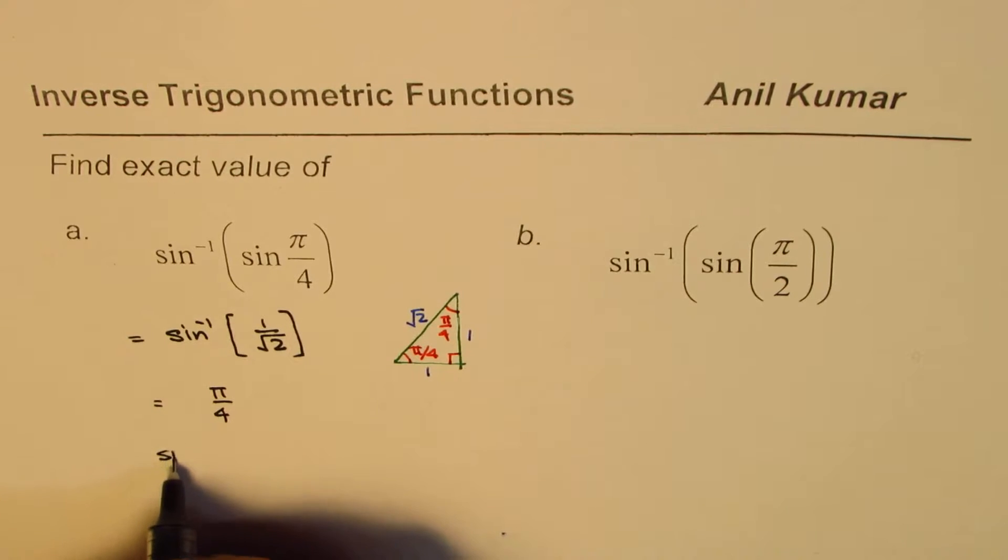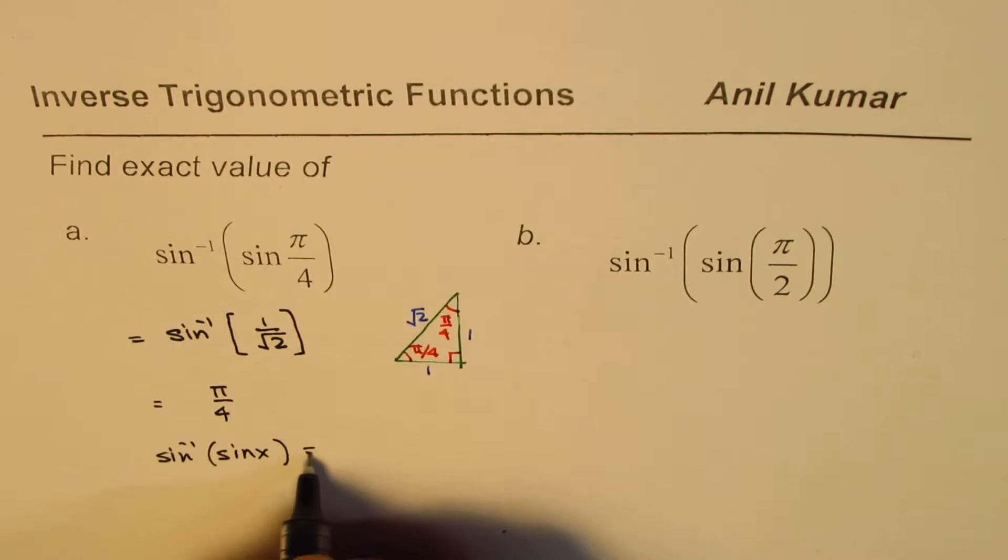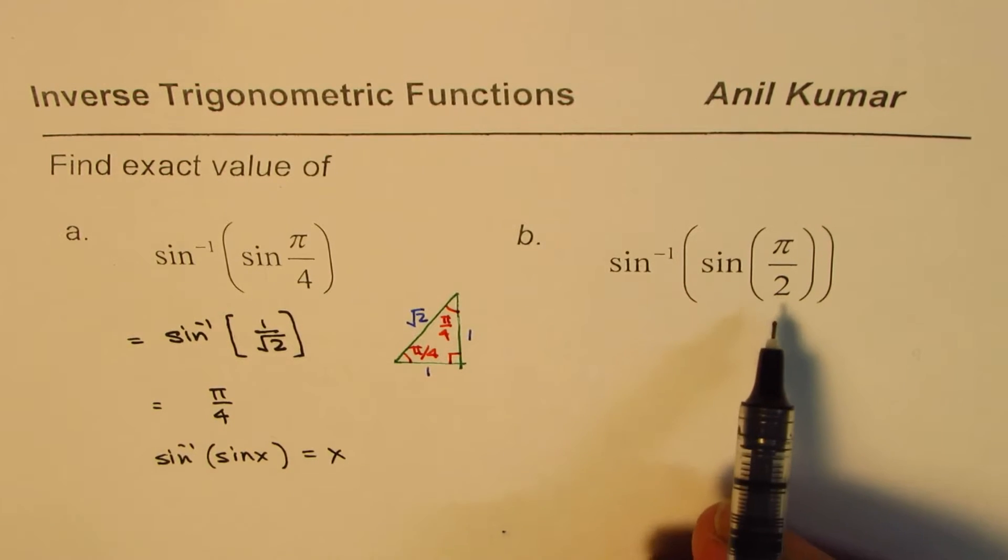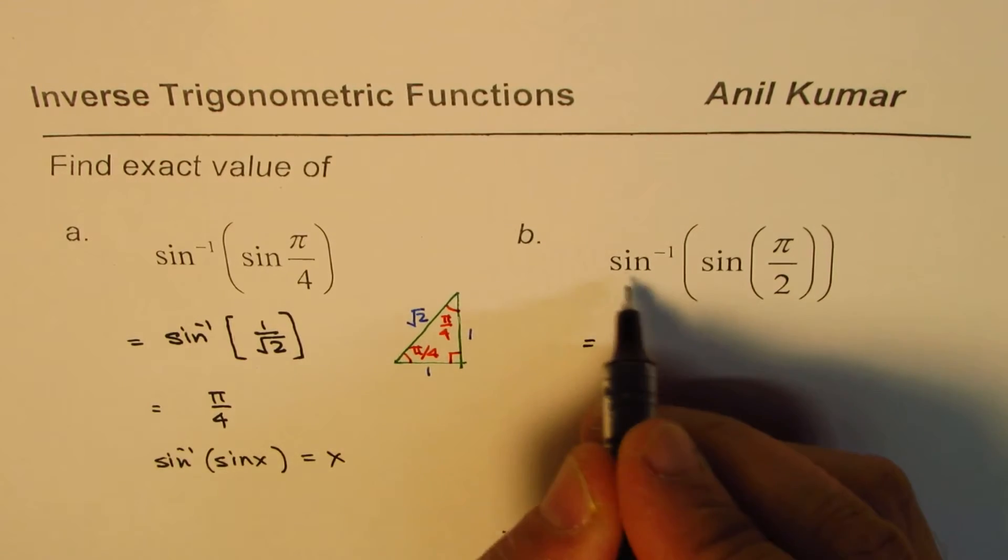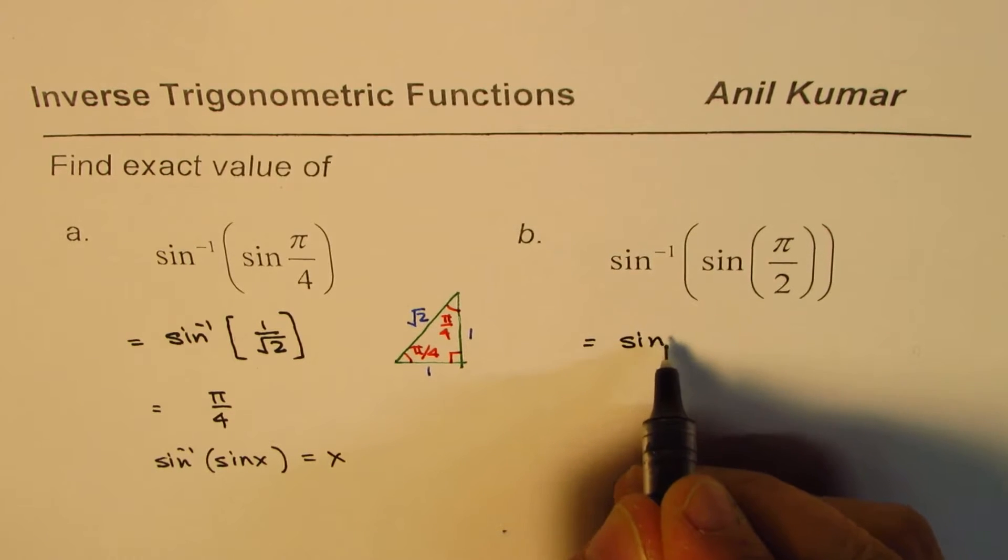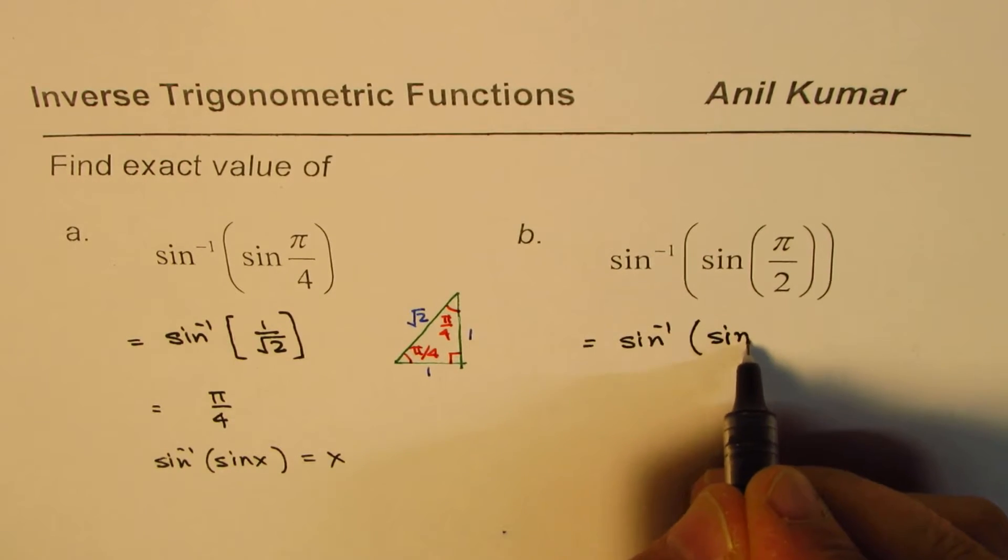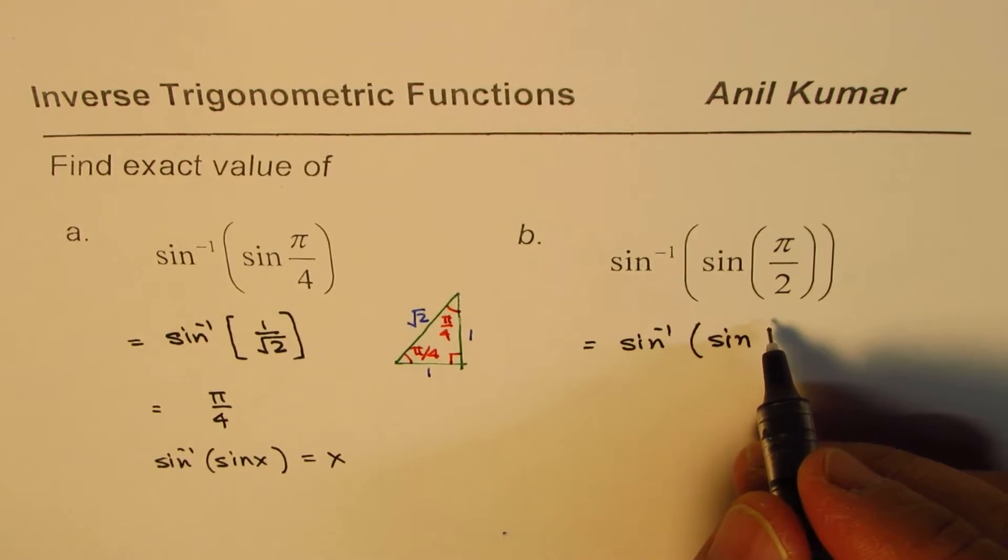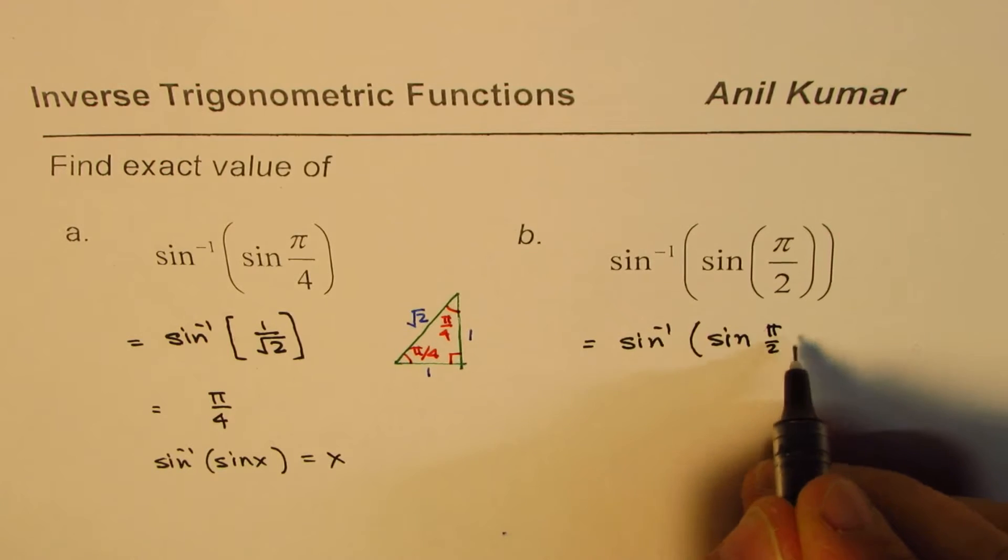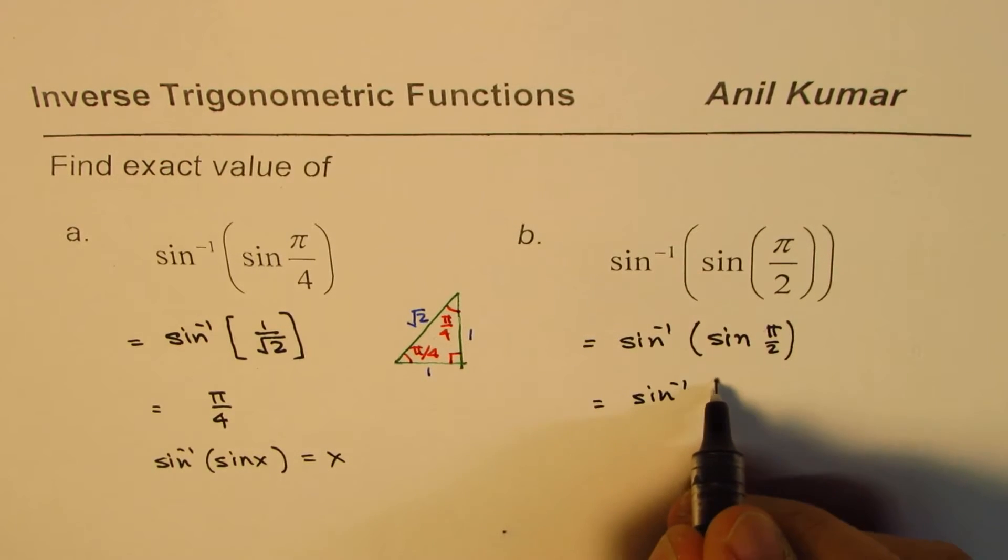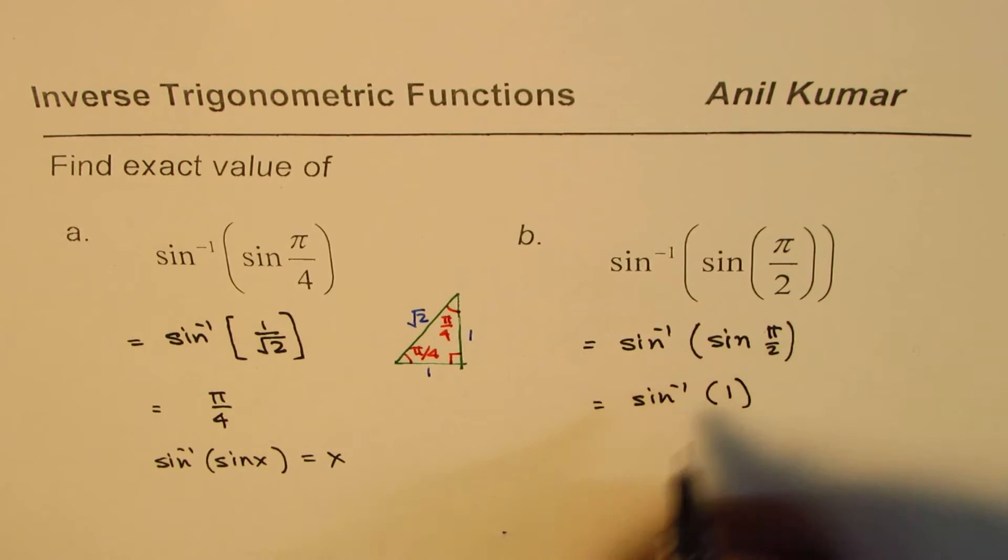Now you can try here also. What we have here is sine inverse of sine pi by 2. That means sine inverse of sine, what is sine pi by 2? Sine pi by 2 is 1, so we can write this as sine inverse of 1.